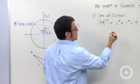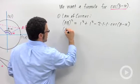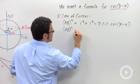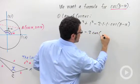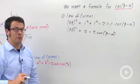Okay, now just simplifying a little bit, this is AB squared equals 2 minus 2 cosine of beta minus alpha. Okay, so that's one formula.